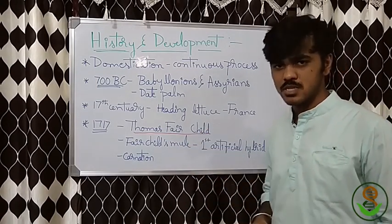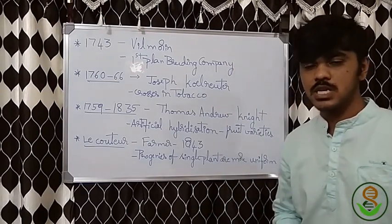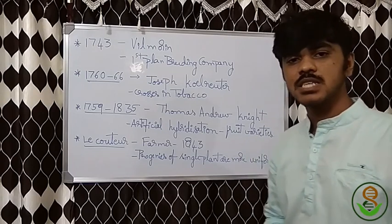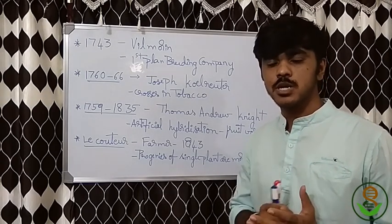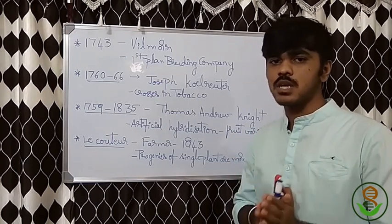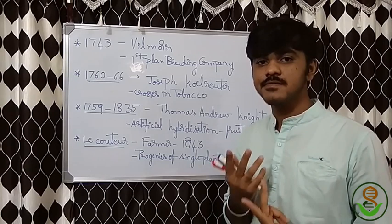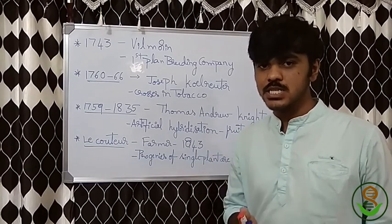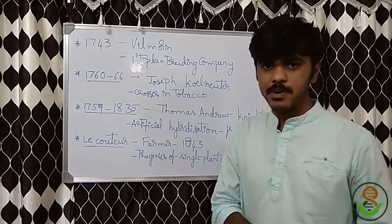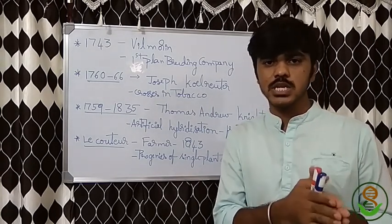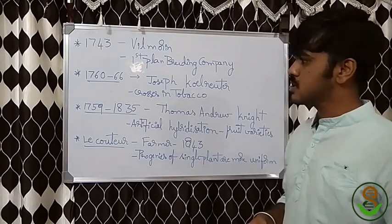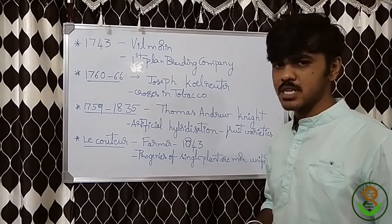The next important year is 1743, when the first company in plant breeding was established. The company name is Vilmorin — not a scientist, but a company started in 1743 by a couple who were very good seed scientists. That is the first plant breeding company.